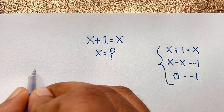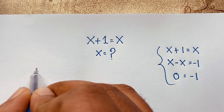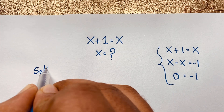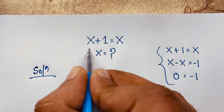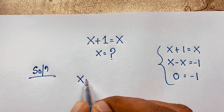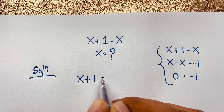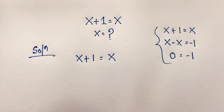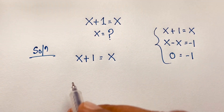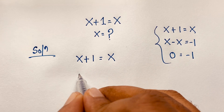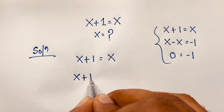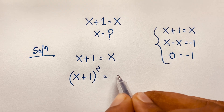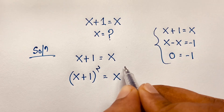First of all, we'll find out if there is any solution in this math problem. Our question is x plus 1 is equal to x. Now I use both sides whole squared — if I square both sides, this is x plus 1 bracket to the power 2 is equal to x to the power 2.